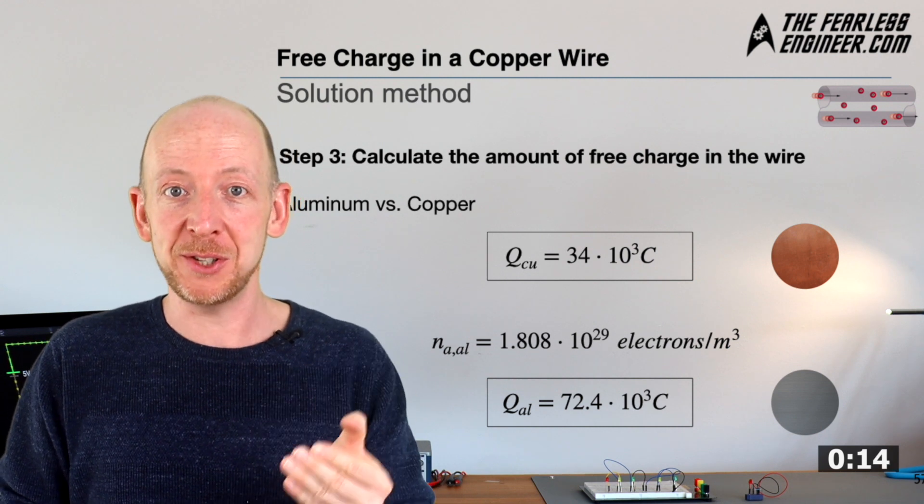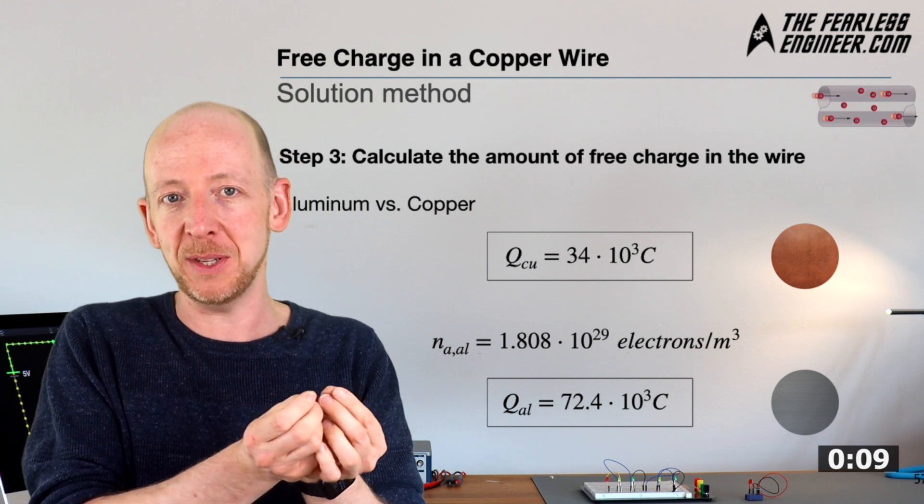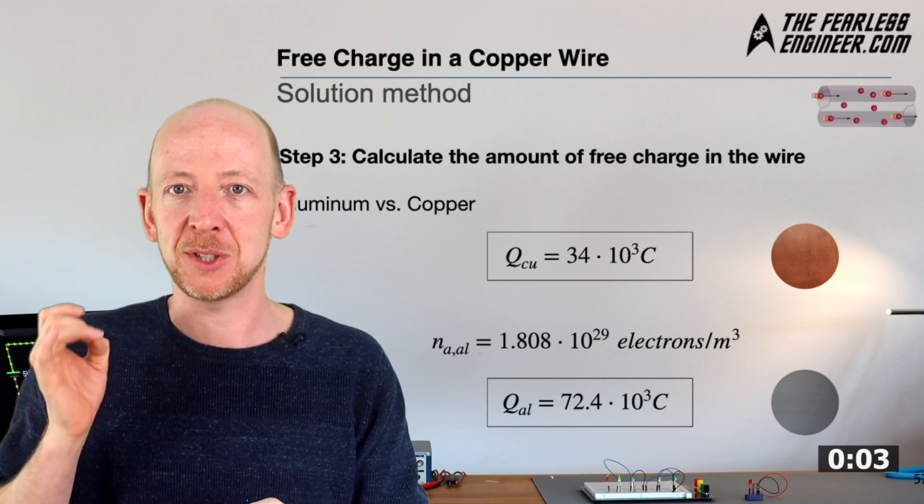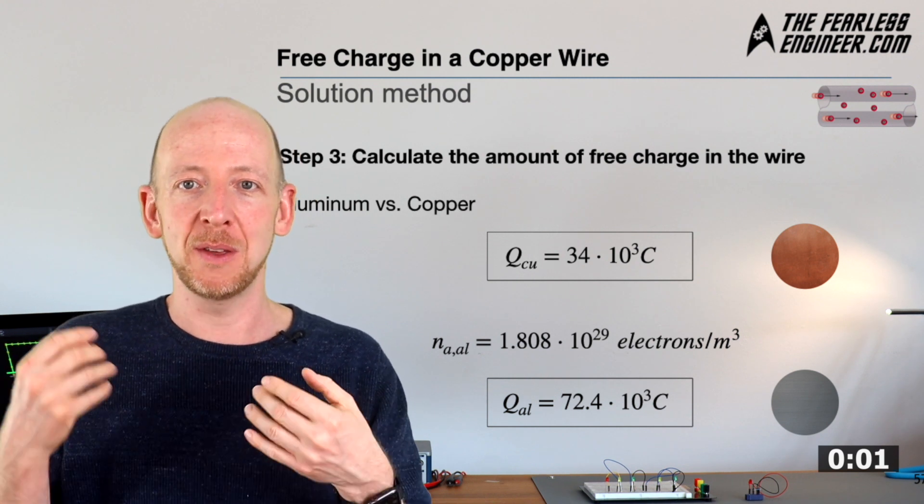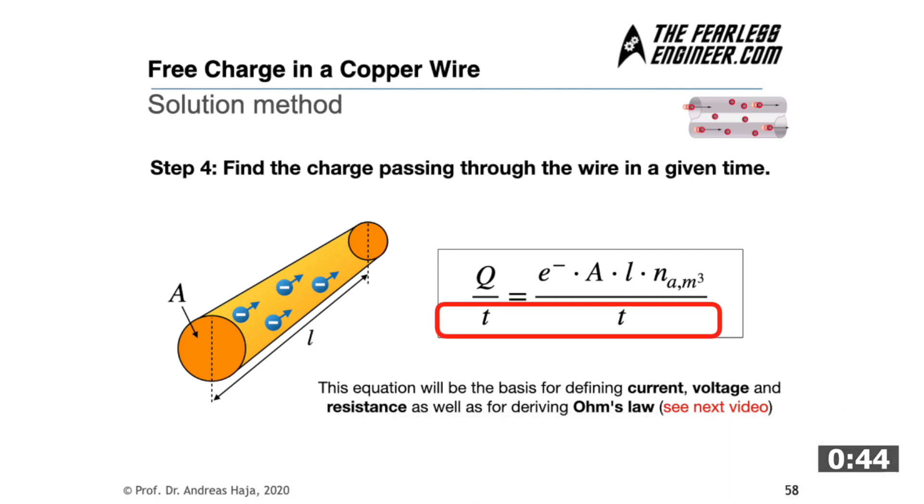So far we have assumed that all free charges are more or less at rest, but if we now assume that the charges move into the same direction at a certain speed, then the temporal aspect needs to be added to the equation we already have for Q, and we can calculate the amount of charge per time that moves through the conductor. And to do this we simply divide the equation for Q on both sides by a time T, thus providing us with a charge per time instant which is Q divided by T equals E minus times A times L times Na divided by T. And you should really remember this equation here because it will be the basis for the definition of current and voltage in the next video and even for the electrical resistance as well as Ohm's law later in the course.